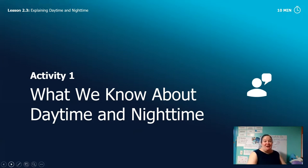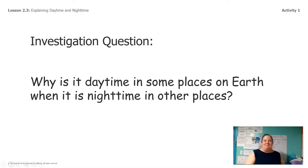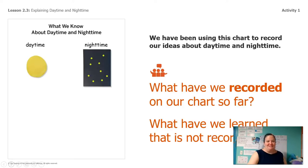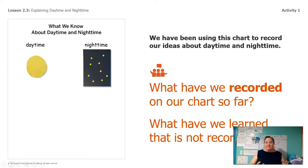We're going to look at what we know about daytime and nighttime, because we are really close to being able to answer this question: why is it daytime in some places on Earth while at the same time it's nighttime in other places on Earth?